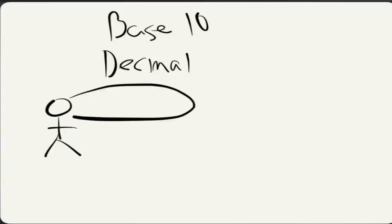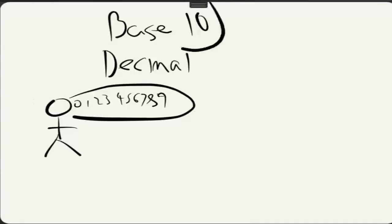...we can count using the digits 0, 1, 2, 3, 4, 5, 6, 7, 8, and 9. So we have 10 different digits. This is why it's called Base 10, or Decimal meaning 10. So that's where those names come from.